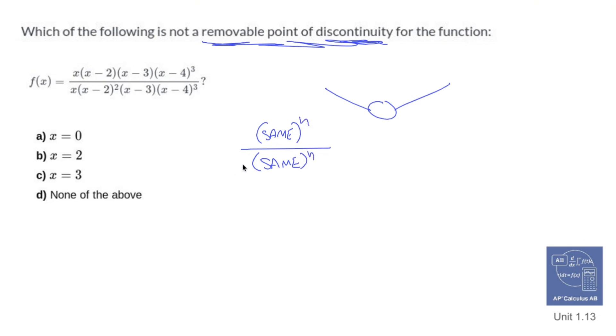So if I look at each of these, x would be zero, but the multiplicity is the same. That's a hole. I want the one that's not a hole, so zero is not going to be my answer.